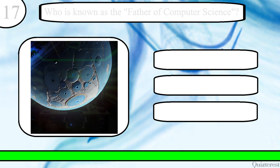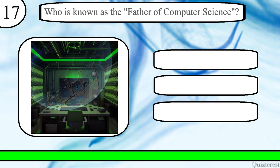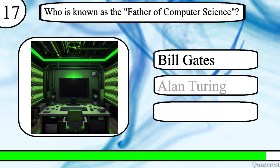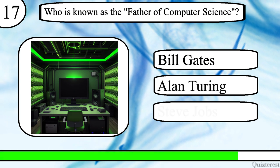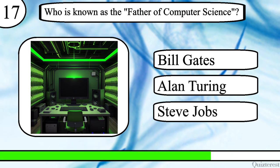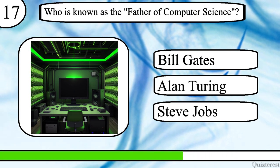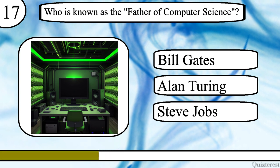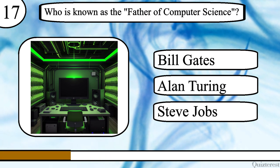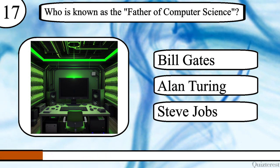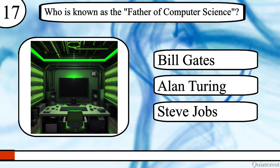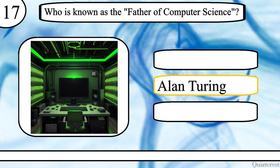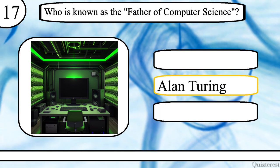Question 17. Who is known as the father of computer science? Bill Gates, Alan Turing or Steve Jobs? The correct answer is Alan Turing.